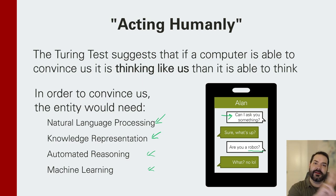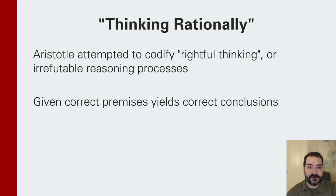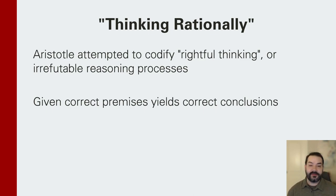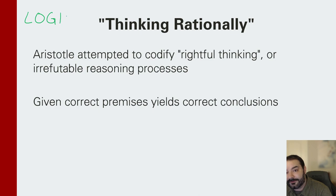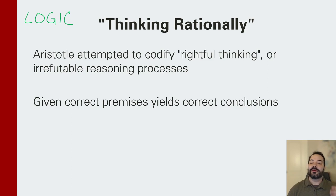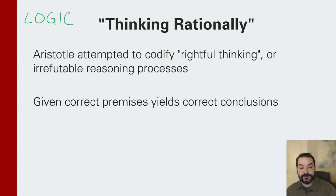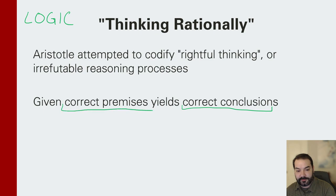We're only now at category two, acting humanly. That brings us into category three, thinking rationally, which boils down to the concept of logic. The entire idea is that maybe what it means to be intelligent is being able to produce correct conclusions from correct premises.